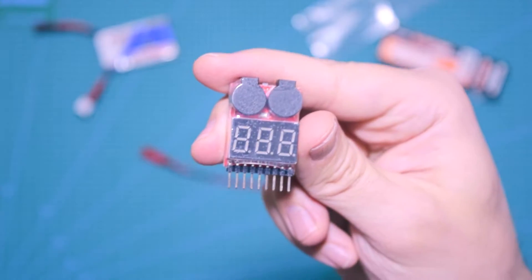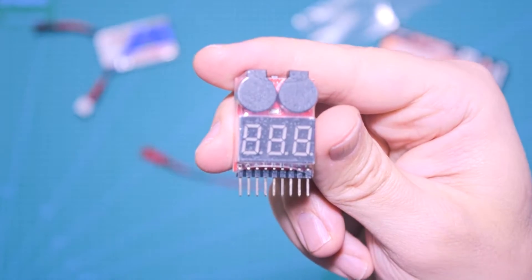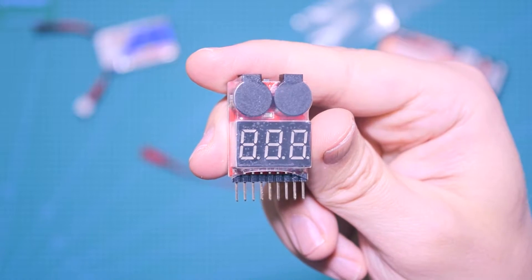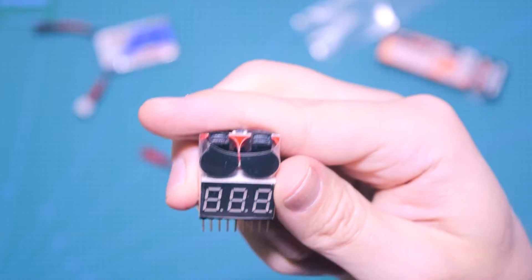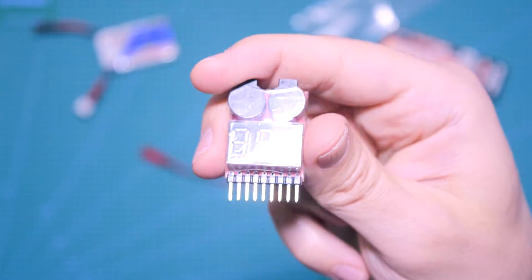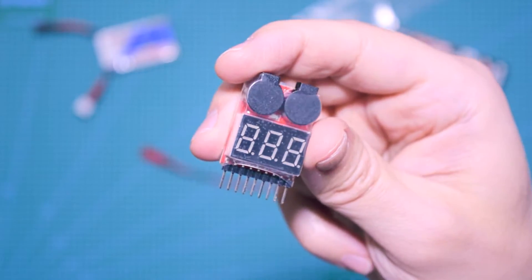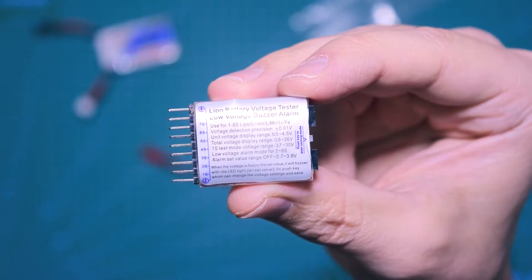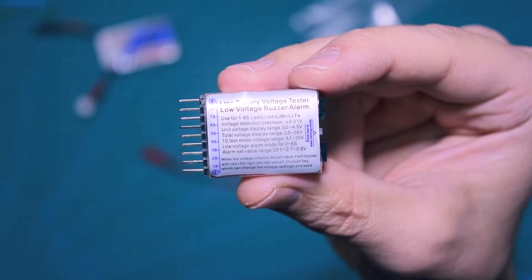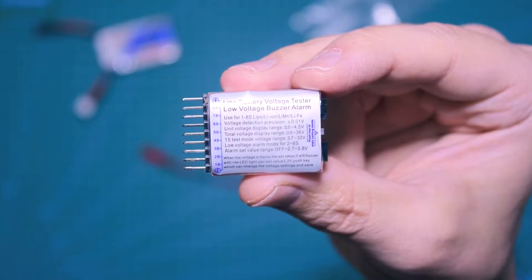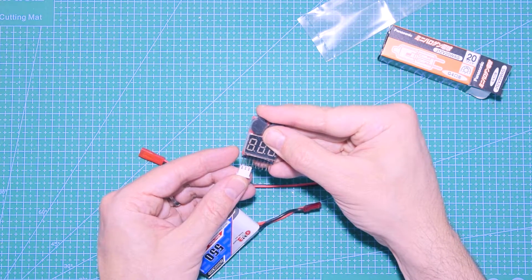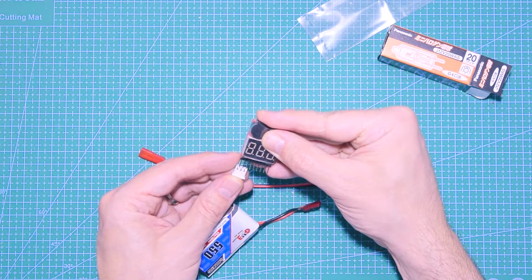Then you get one of these little voltage checkers. This also is really cheap, I think it's like a couple of dollars. This plugs directly into the balance port of your battery, it's self-powered, and it supports from 1s up to 8s batteries.